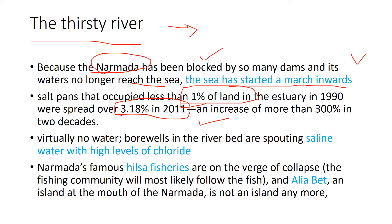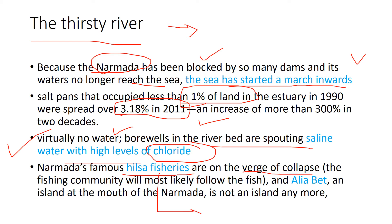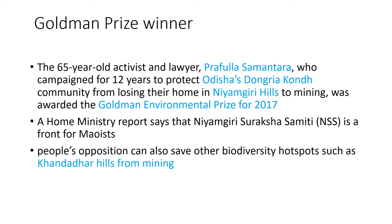Due to the presence of sea water in the river, virtually no water bore wells along the river beds are viable - they are sprouting with saline water. Even bore wells sunk alongside the Narmada yield extremely saline water due to intrusion of sea water into the groundwater. The river also possesses a high amount of chlorine. Narmada's famous Hilsa fisheries are on the verge of collapse. Also remember: Aliabet, a highland in the mouth of the Narmada, has been submerged. Key prelims points: thirsty river = Narmada, high chlorine, Hilsa fisheries, and Aliabet.